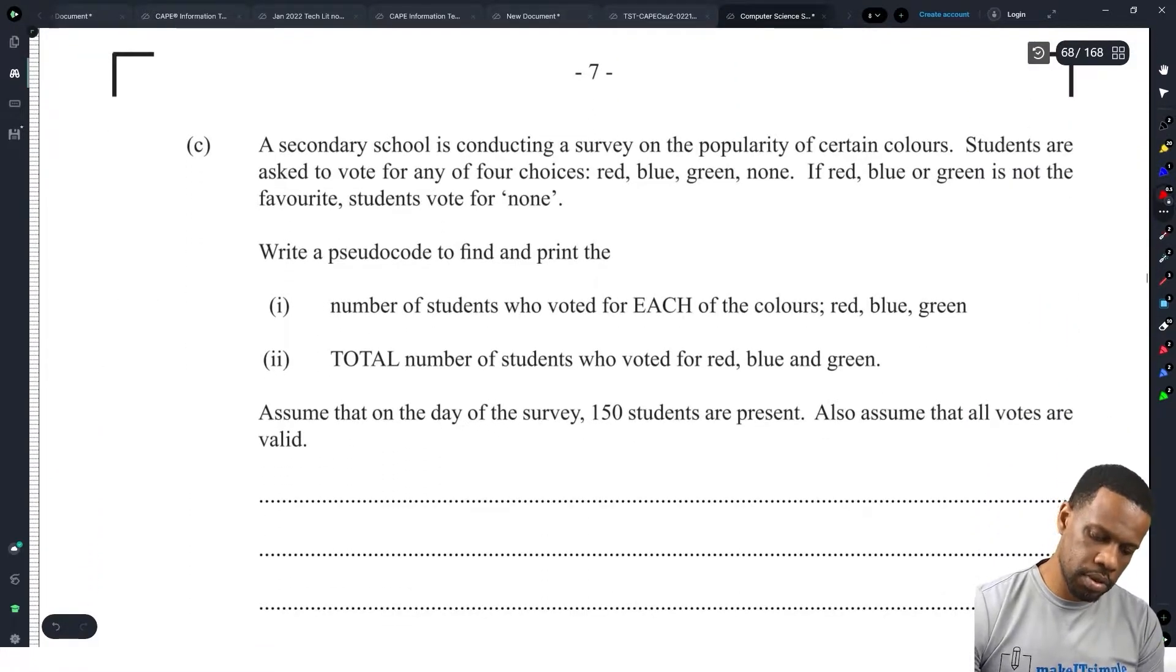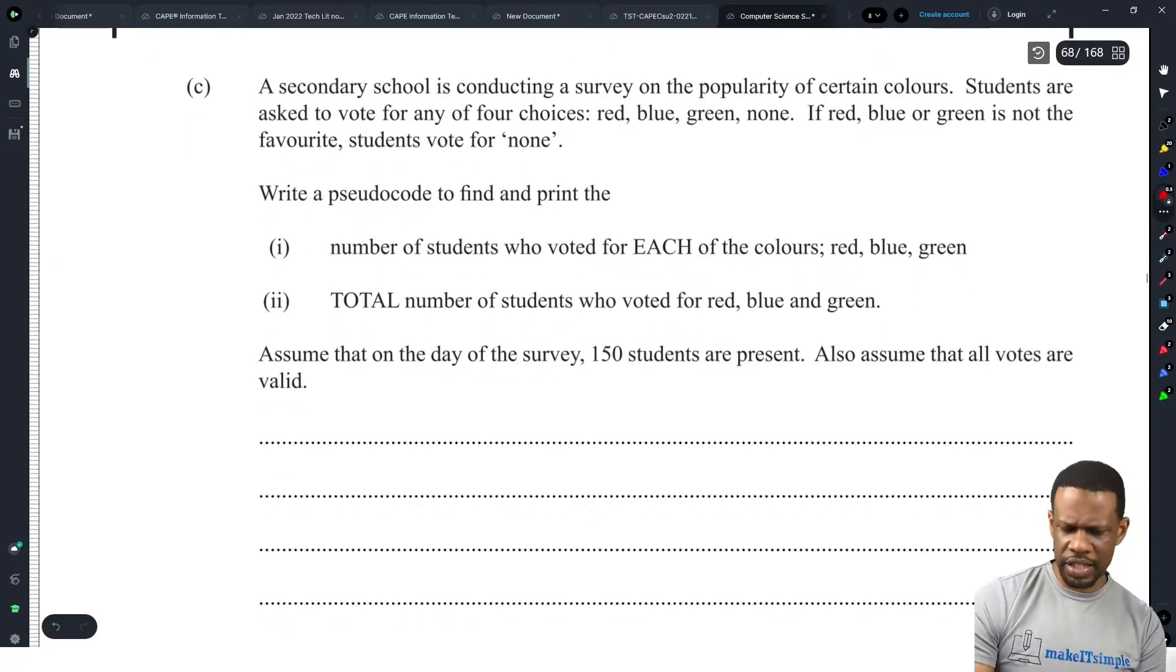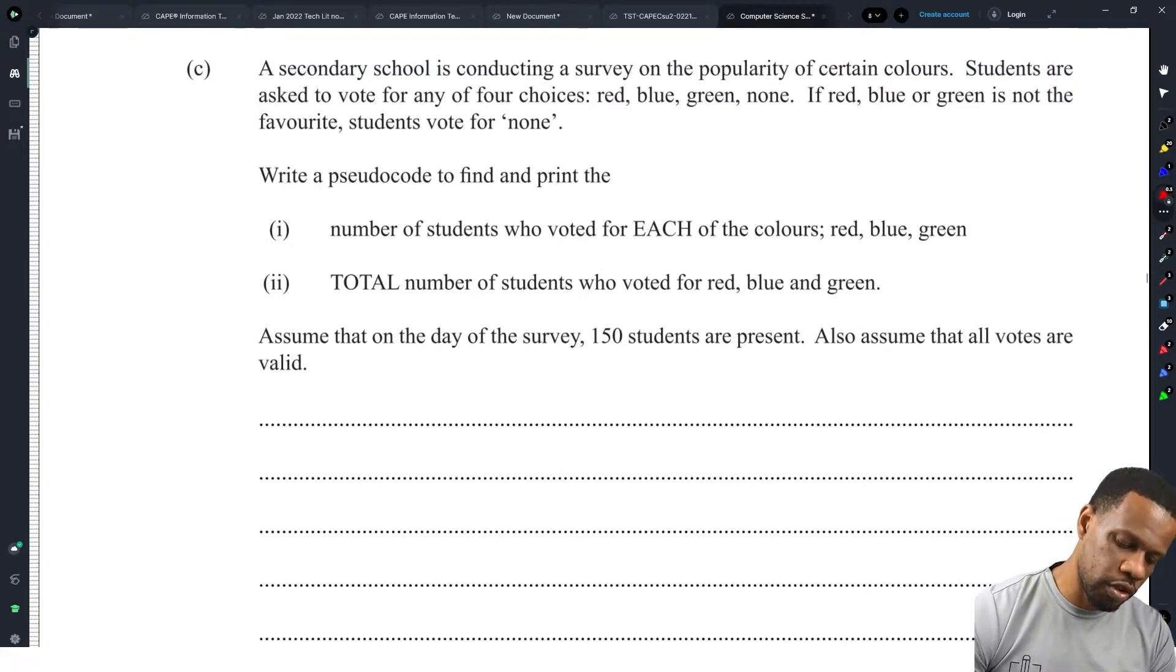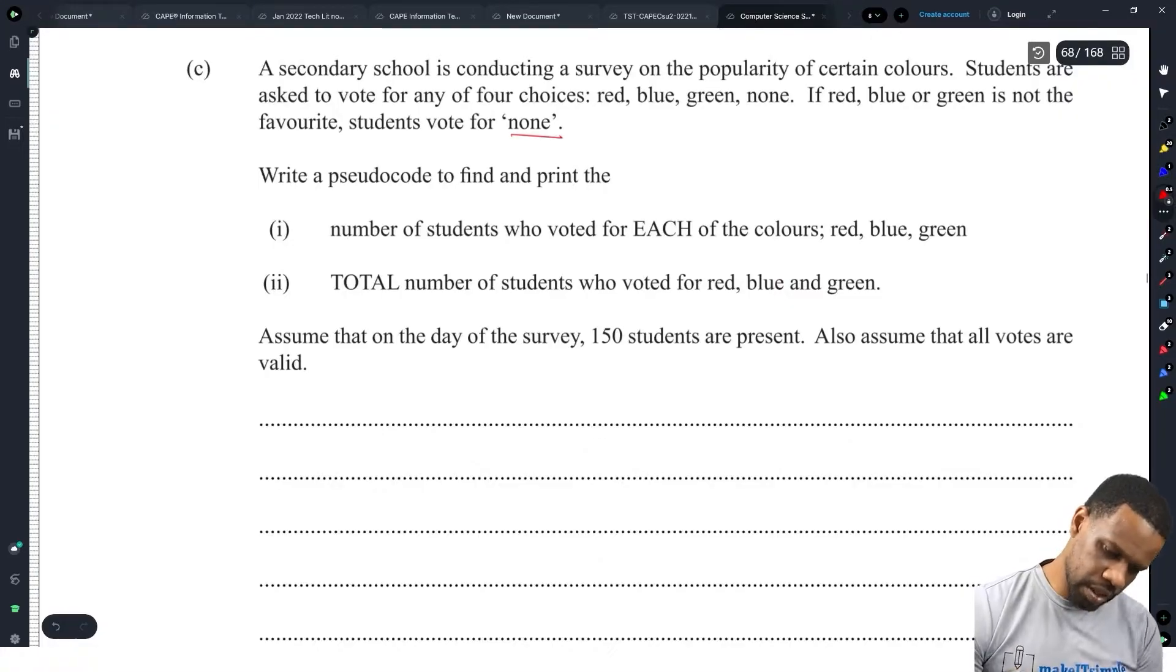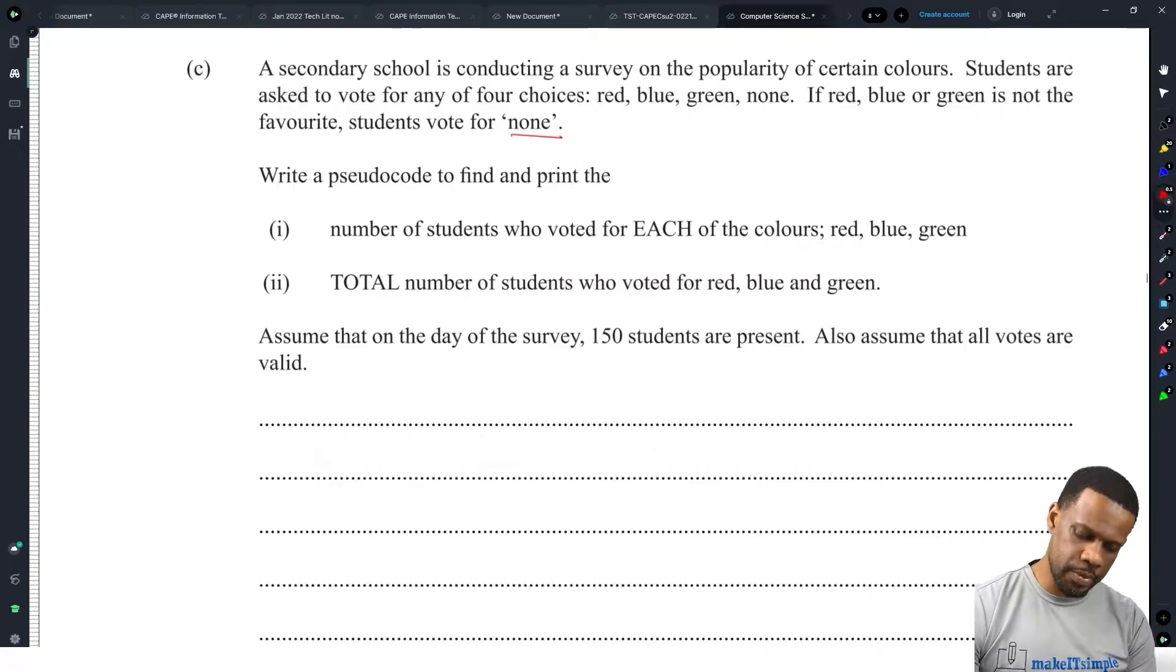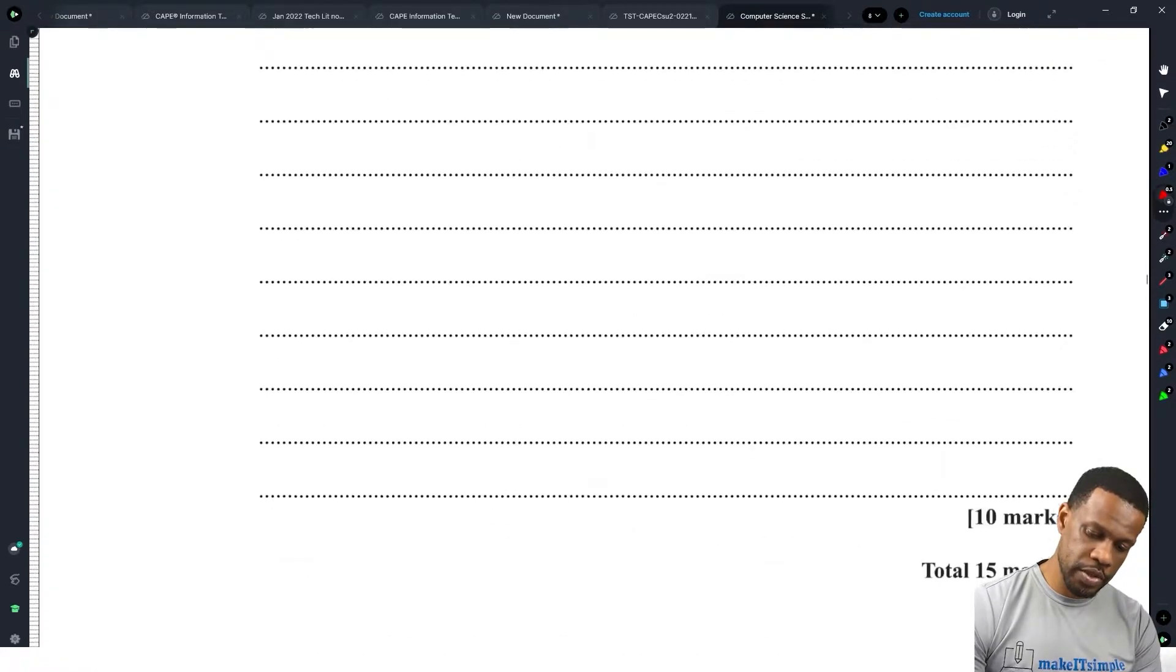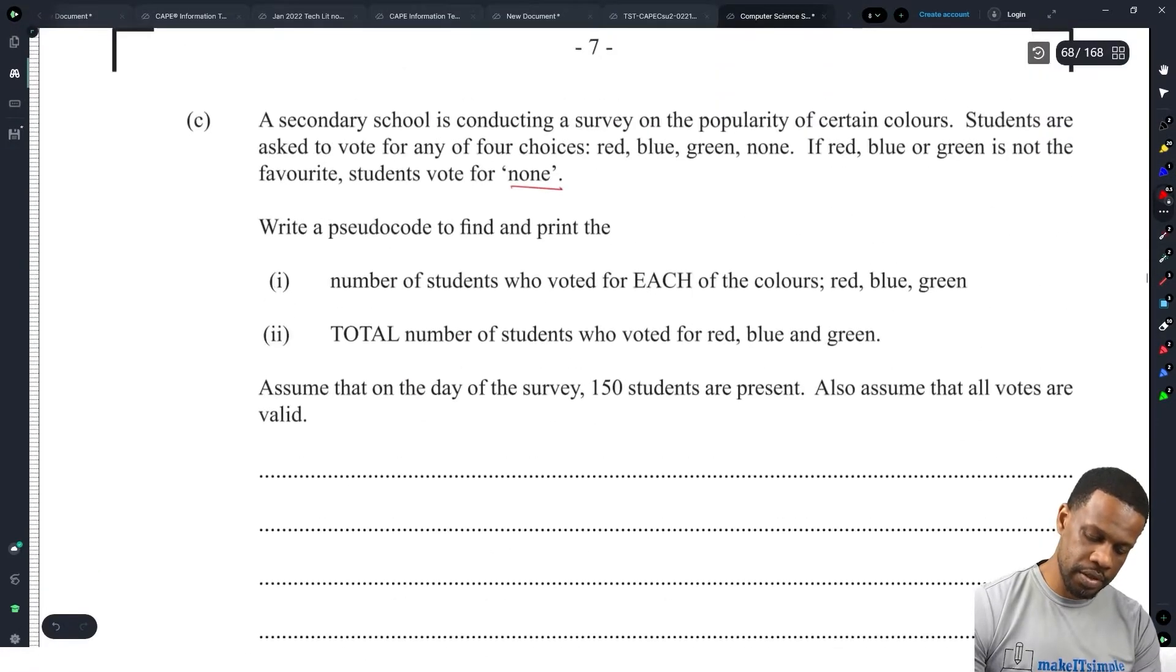A secondary school conducting a survey on the popularity of certain colors. Students are asked to vote for any. Oh this is the classic vote question. Vote on choices: Red, blue, green, or none. This is literally, this came from 2011 or 2010. I've done this too many times. Write the pseudocode to find and print the number of students who voted for each of the colors. Assume that on the day of the survey, 150 students are present. Also assume that all votes are valid.